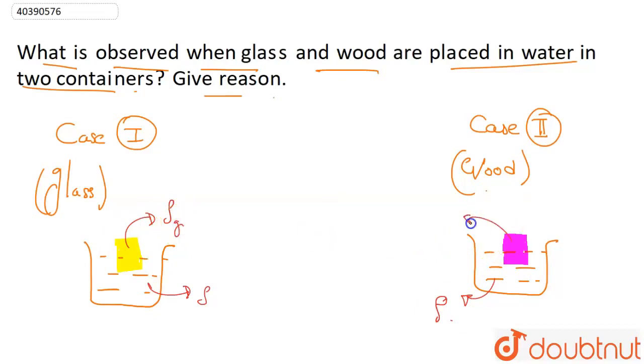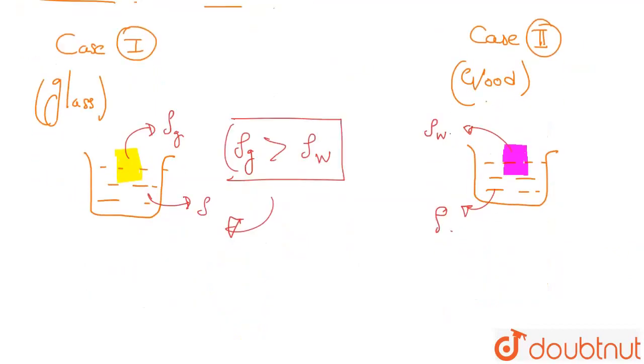So we have to understand the density of glass compared to the density of water. In the case of wood, the density of water is more compared to the density of wood.